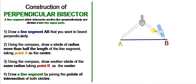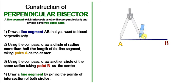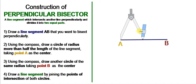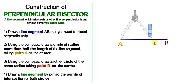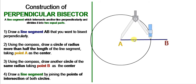We can take any radius which is more than half of this line. We cannot take a radius that is not more than the half. Since we drew a line of 8 centimeters, we can take any radius more than 4 centimeters, because 4 is half of 8. I am taking a radius just over half and drawing a circle with point A as the center.